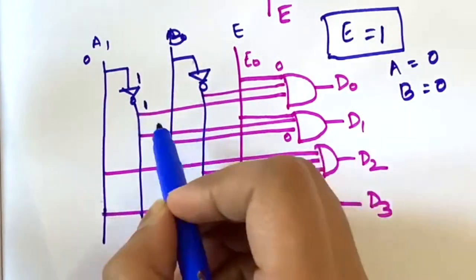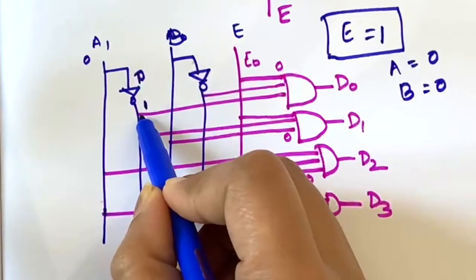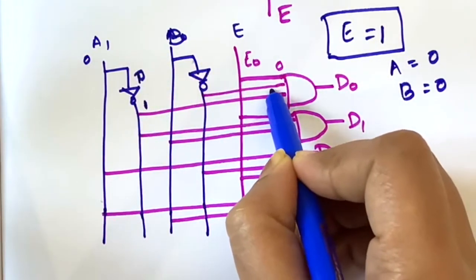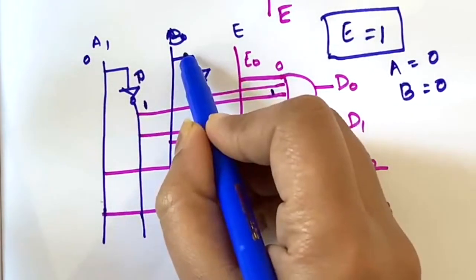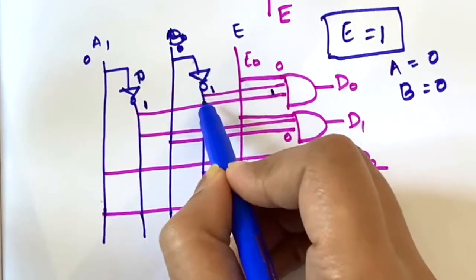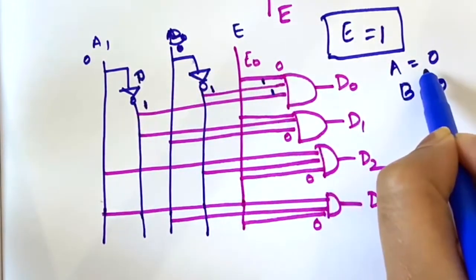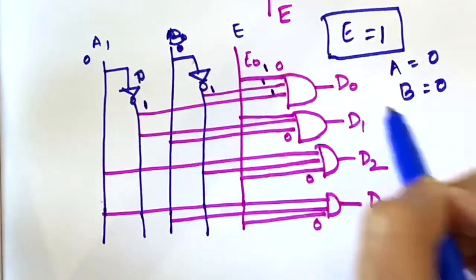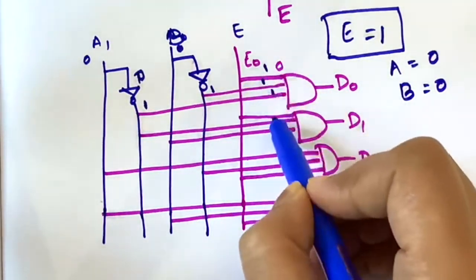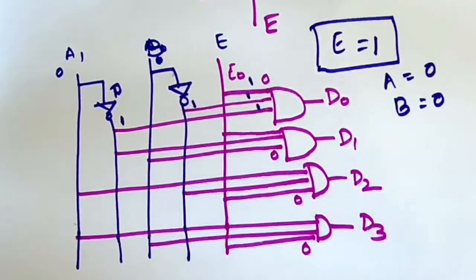So when A equal to 0, here after negation it is 1, so we have 1 here. When B is also 0, here we will get 1 because it is negating, so here it is 1. And when E is also 1, we are getting D0 as output.